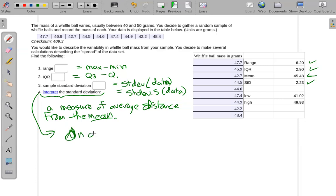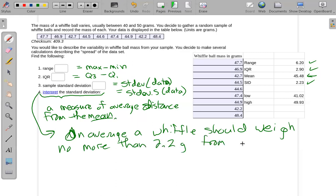on average, a wiffle ball will weigh or have mass no more than about 2.2 grams from, say, 45.5 grams.